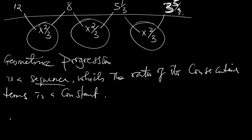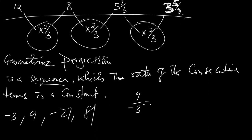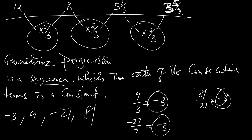Now let's look at the third sequence: -3, 9, -27, and 81. 9 divided by -3 gives us -3. -27 divided by 9 gives you -3. 81 divided by -27 gives you -3. So you see the ratio of each consecutive term is a constant. So if you see a sequence in which the ratio of each consecutive term is a constant, it is called geometric progression.